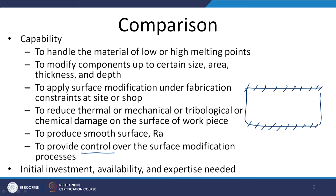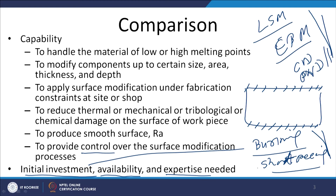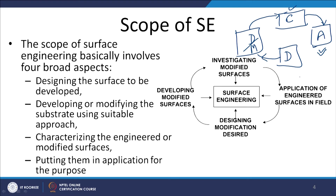Since each process uses a different kind of technology and different control systems, the capability of each process is found to be different. To compare the different processes we need certain factors based on which we can assess their capability. One important point is their capability to handle the kind of material they can process for surface modification — for example, whether the material can withstand high or low temperatures during the process.